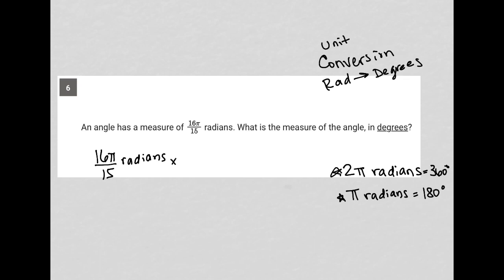And then we multiply by the conversion factor, which is that π radians is the same as 180 degrees. So this introduces our new unit of degrees.